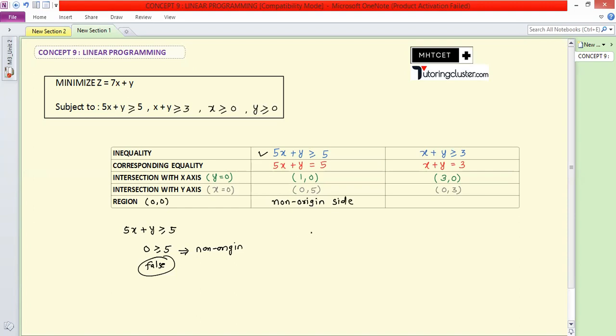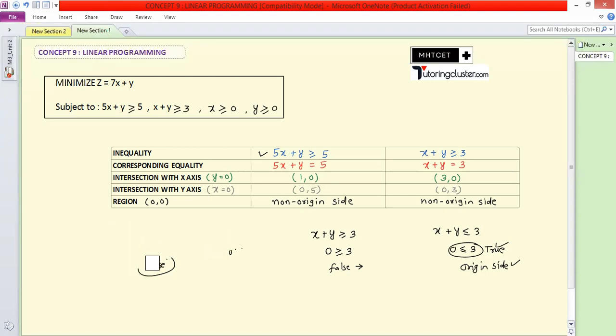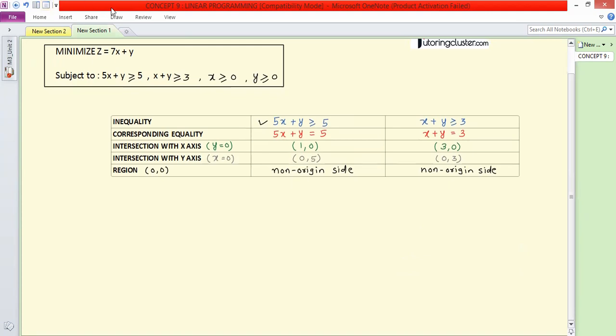Let me check with the second inequality: x plus y greater than or equal to 3. Putting (0,0) gives 0 greater than or equal to 3. Is 0 greater than 3? No, this is false, so we select the non-origin side. In case the inequality was less than or equal to 3, then 0 less than or equal to 3 would be true, meaning 0 is less than 3, which is true. In that case, we would select the origin side. So you need to check whether it's a greater than or less than symbol.